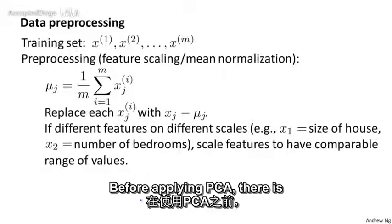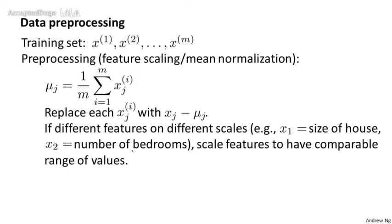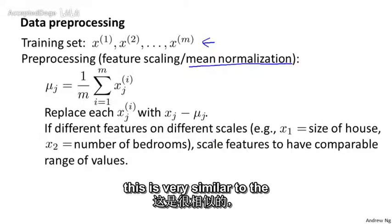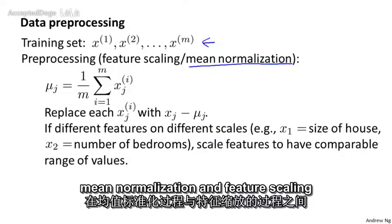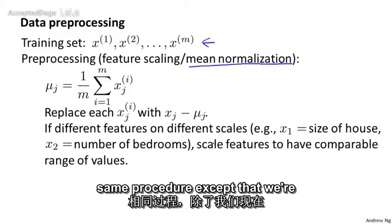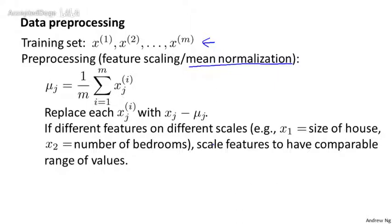Before applying PCA, there's a data pre-processing step which you should always perform. Given a training set of m unlabeled examples, it's important to always perform mean normalization. And then depending on your data, maybe perform feature scaling as well. This is very similar to the mean normalization and feature scaling process that we had for supervised learning — it's actually exactly the same procedure, except that we're doing it now to our unlabeled data, x1 through xm.